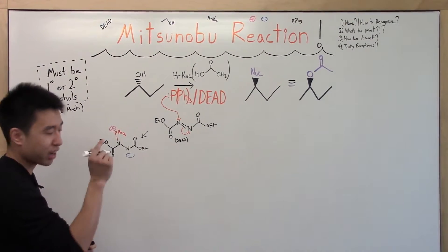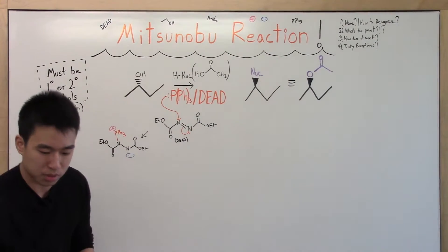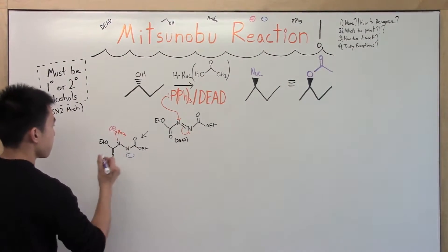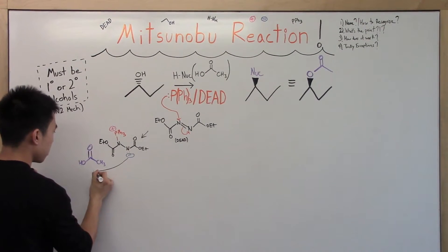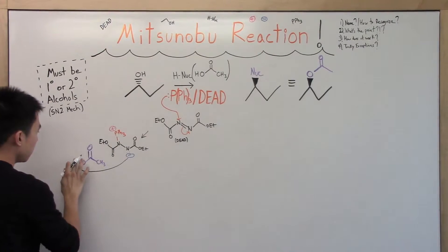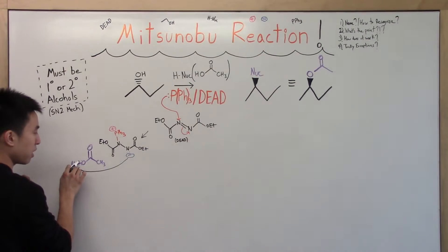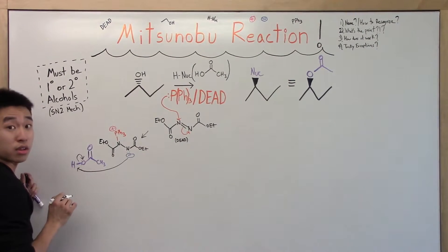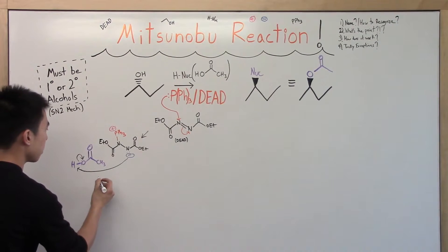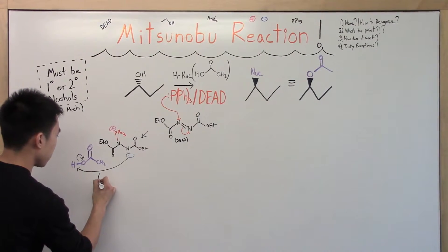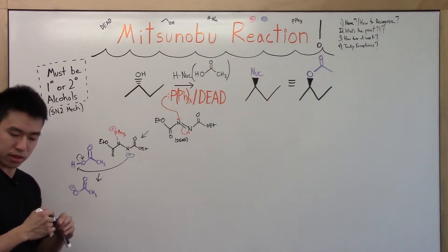All right, so first — activate the nucleophile. We're going to bring in our nucleophile. The negative charge comes in and grabs the H, freeing up the electrons in the bond so they go over onto the O, creating a negative charge. So that is activating the nucleophile — it's going to be charged.